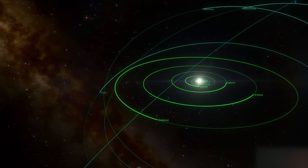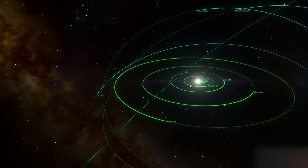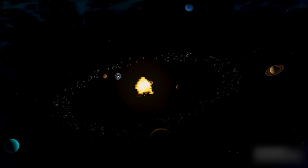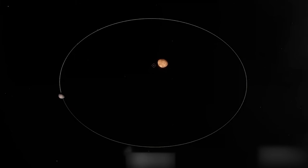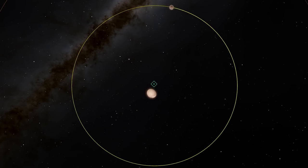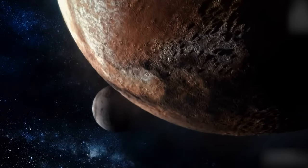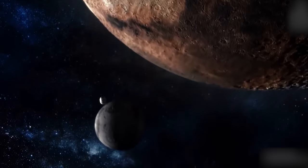Pluto exhibits several peculiarities in its orbital dynamics compared to other planets in the solar system. Beyond its noticeable orbital inclination concerning the ecliptic plane, Pluto undergoes cyclical oscillation near a particular point in its orbit. This phenomenon results from the gravitational influence of its large moon, Charon.